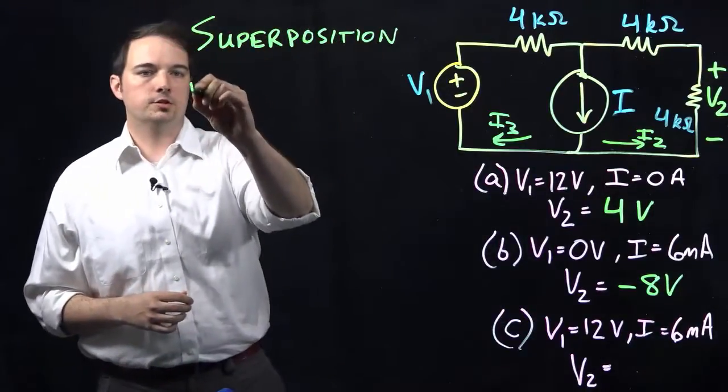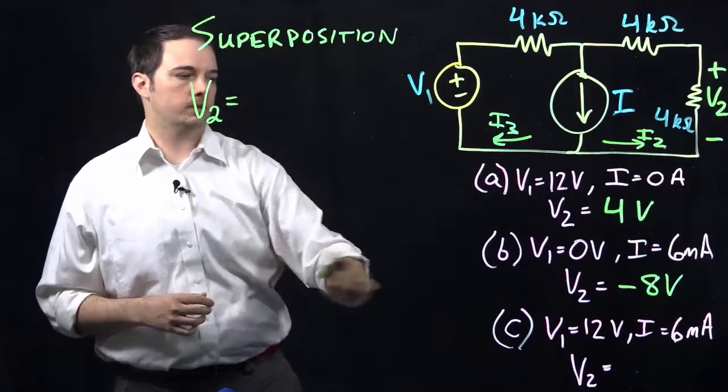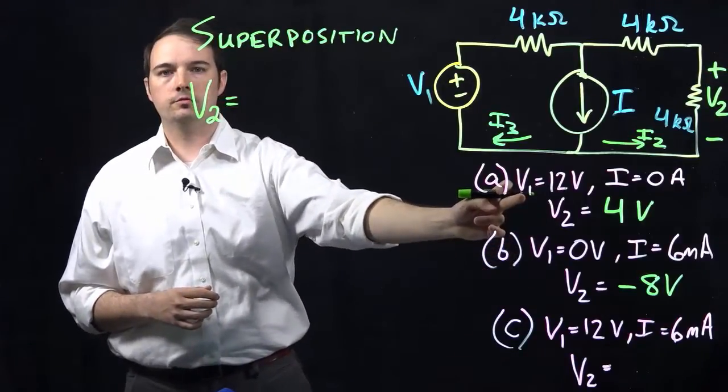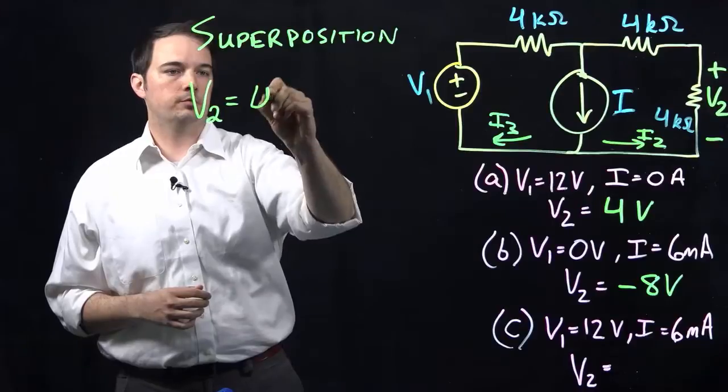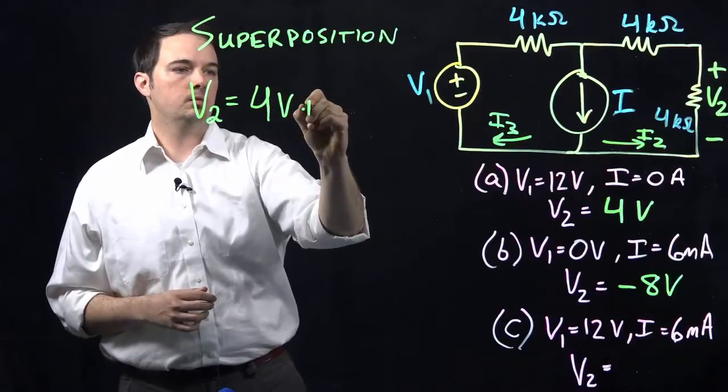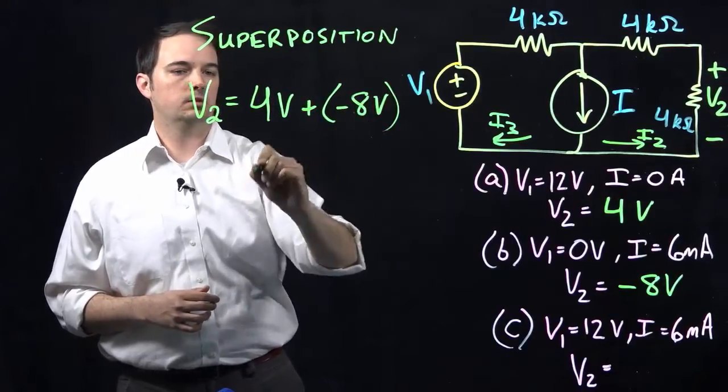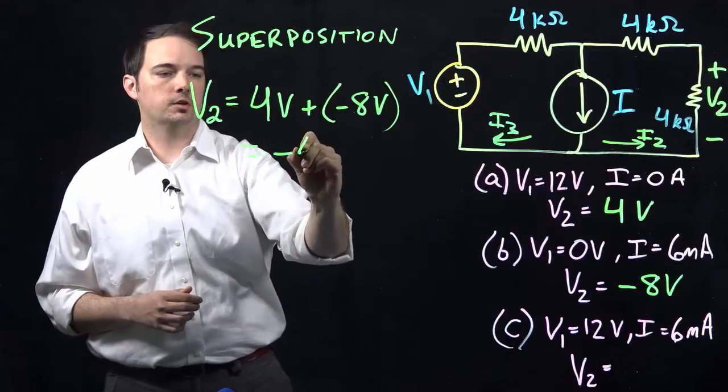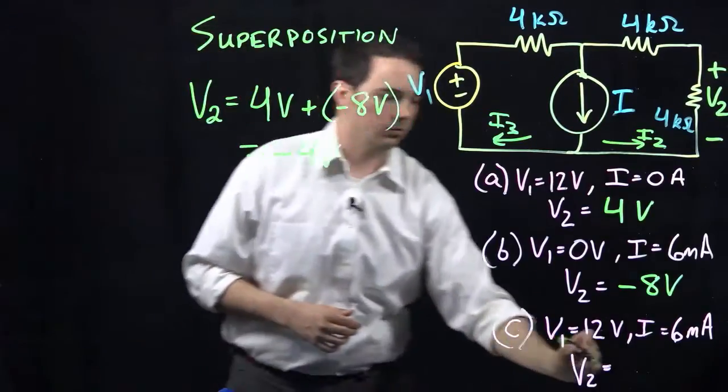So in order to do that, we can just indicate that V2 is just going to be the sum of these two values from parts A and B, so it's just going to be four volts plus my negative eight volts, which of course will just give me a value of negative four volts here.